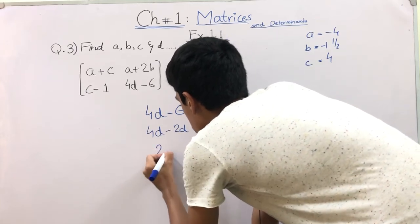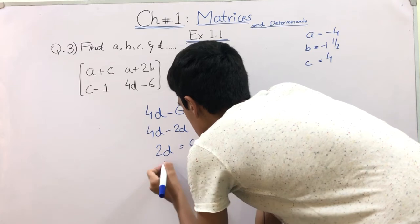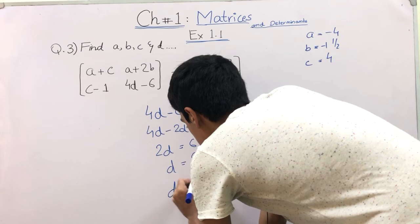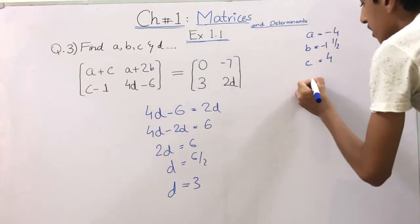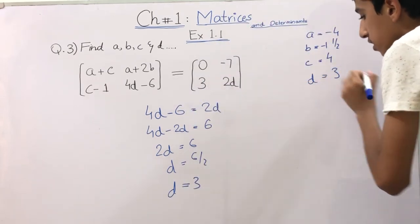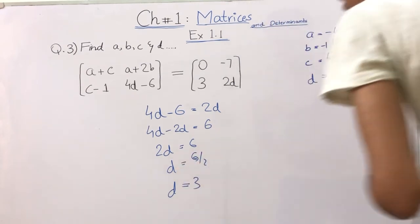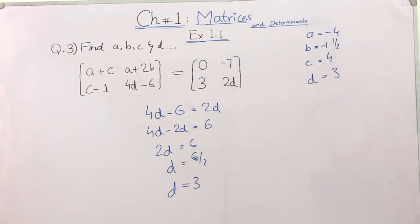We bring minus 6 to the other side, so it becomes plus 6. 4D is equal to 24 plus 6, which is 30. Wait, let me check. Actually, 4D minus 6 is equal to 2 times something. Let me recalculate. We get 2D on the right side, so 4D minus 2D is 2D, and minus 6 to the other side gives plus 6. So 2D equals 6, and D equals 3. So we have solved question number 3 of Exercise 1.1.